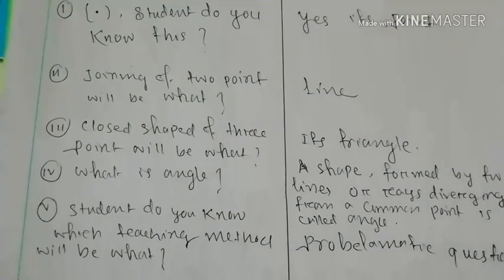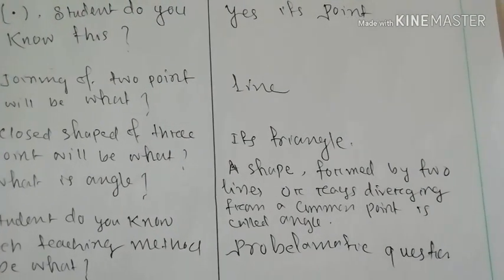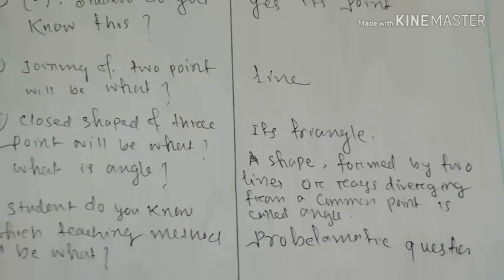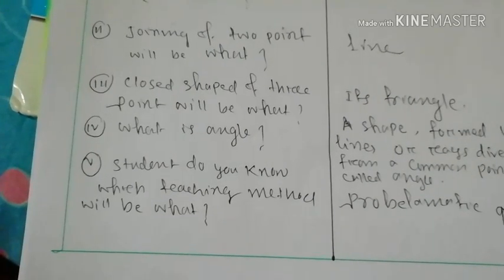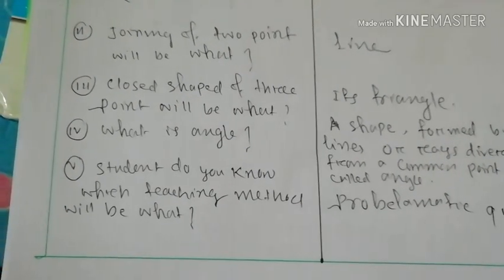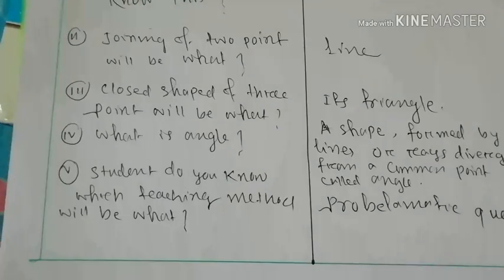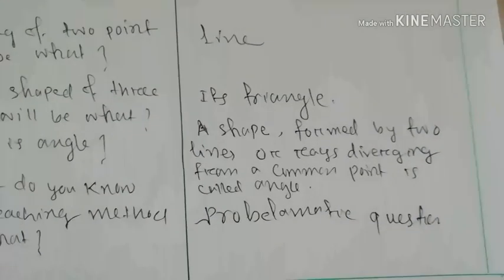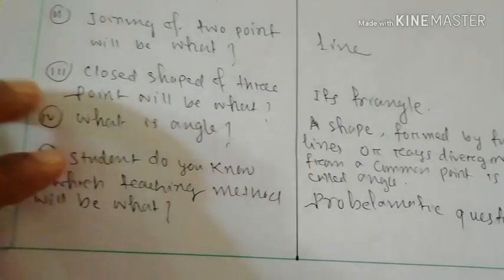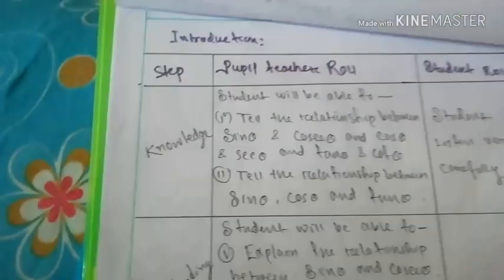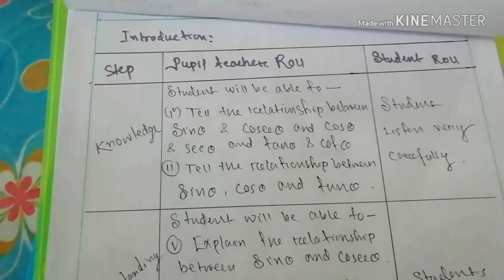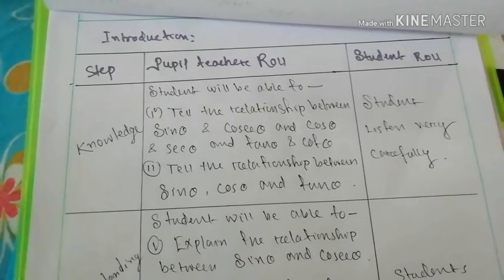Next, what is an angle? The student's response: a shape formed by two lines or rays diverging from a common point is called an angle. Number five, the student should also know about when and which teaching method will be applied. You have to write the introduction step, pupil-teacher role, and student role.